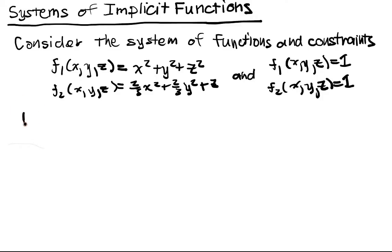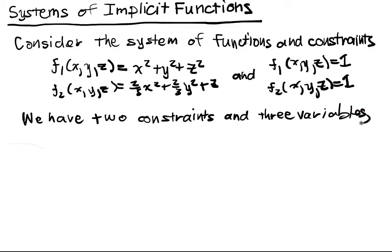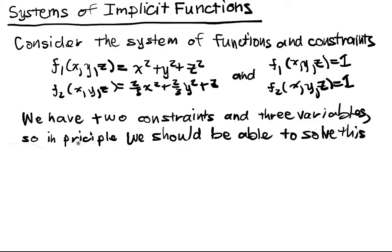So we have two constraints and three variables. In principle, we should be able to solve this system with a single free variable. I have 3 minus 2 equals 1.